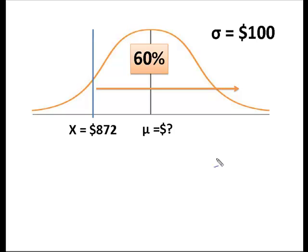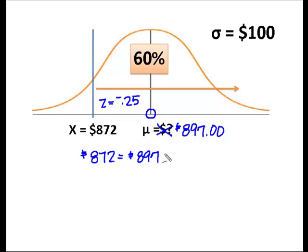And remember, for most of these problems, we can always substitute back in, right? Because now what I know is I solved and I told you that the mean is no longer unknown. I know it's $897. So, the question is if I know that this z-score was a negative 0.25, then I know that this should solve to say 872 is equal to 897 plus a negative 0.25 times 100.